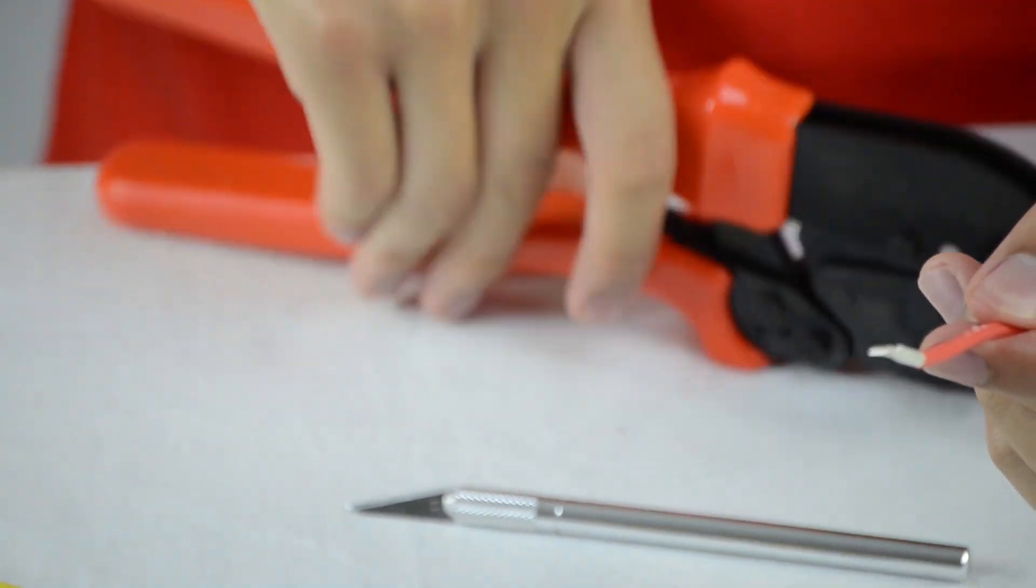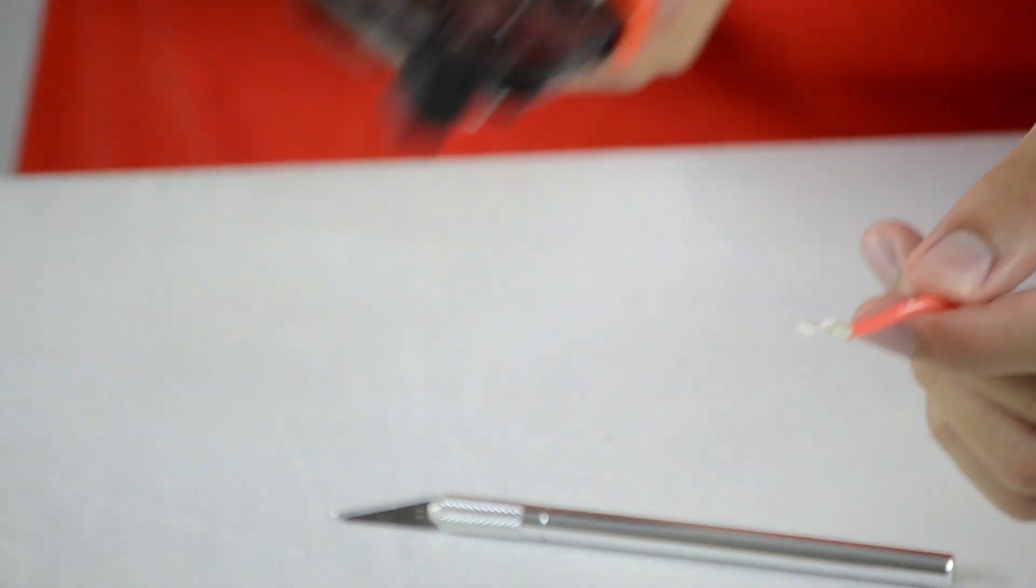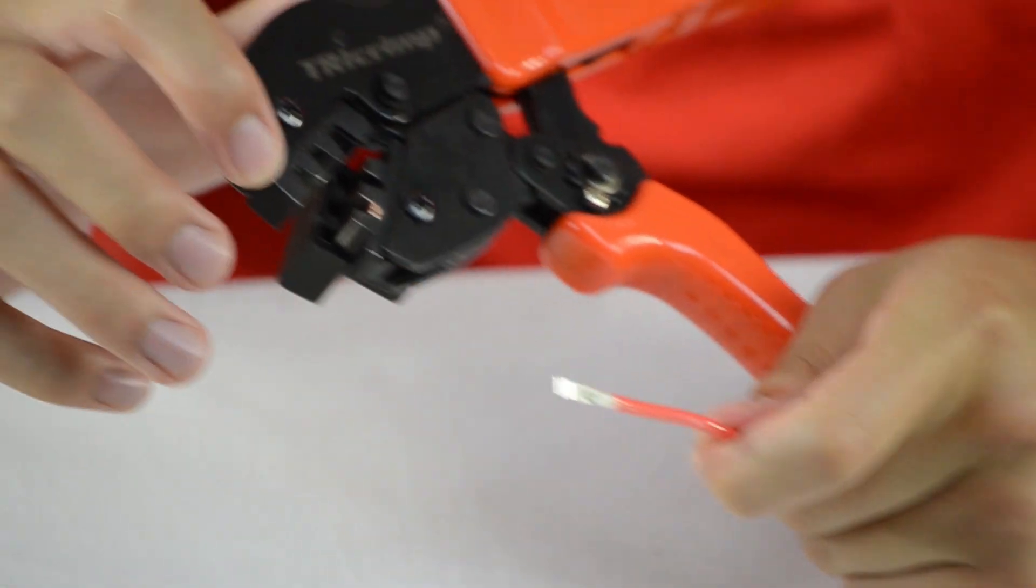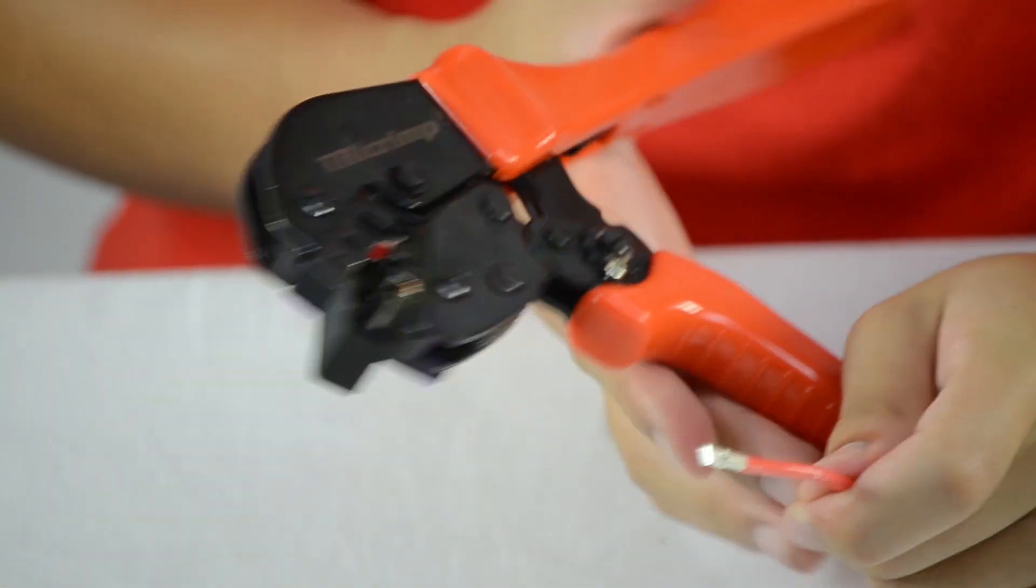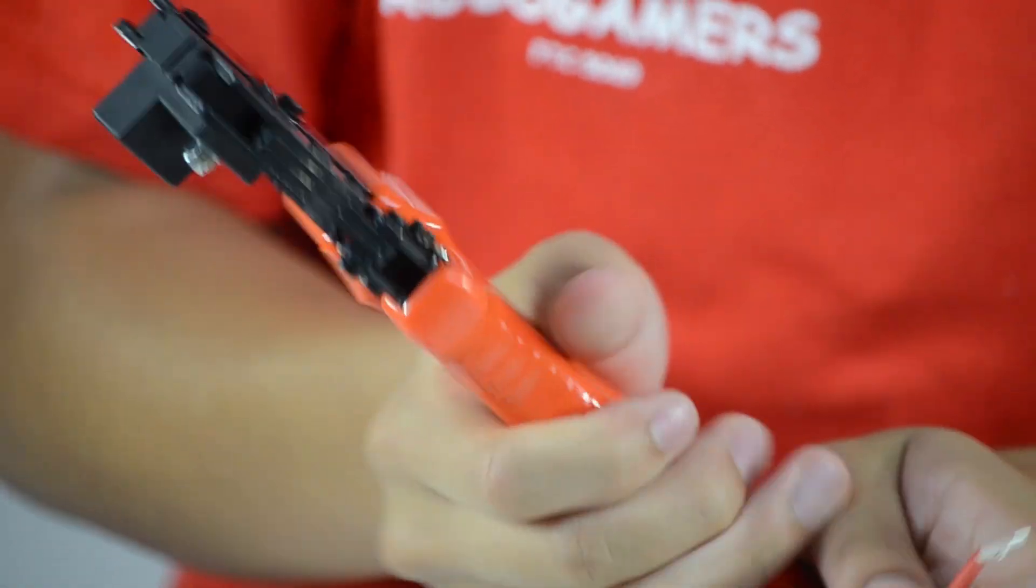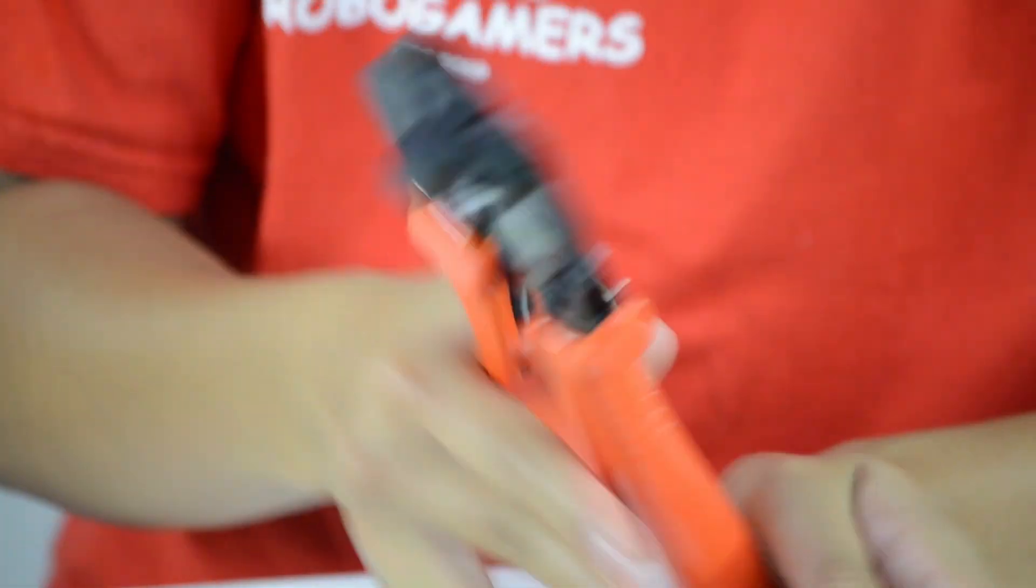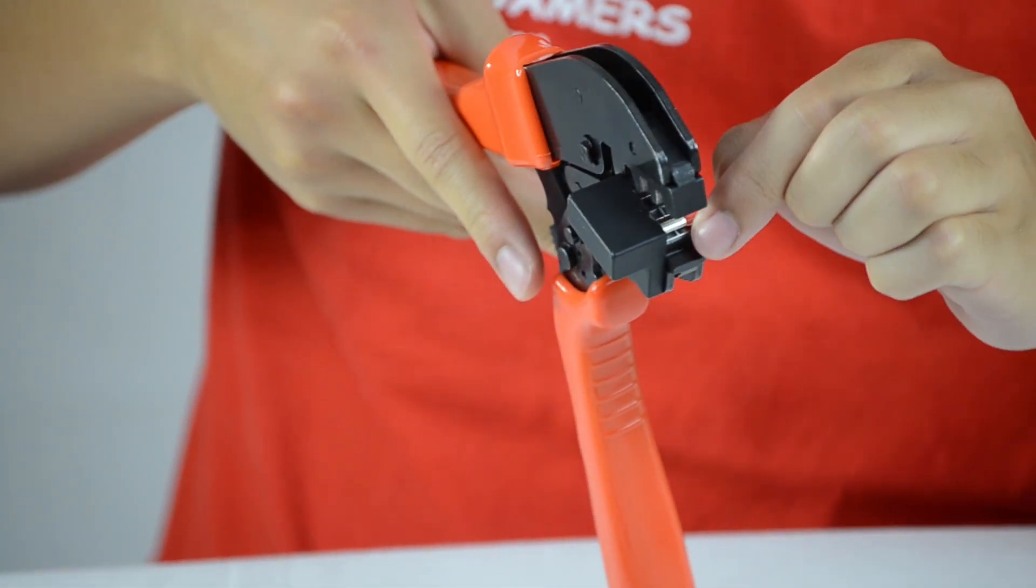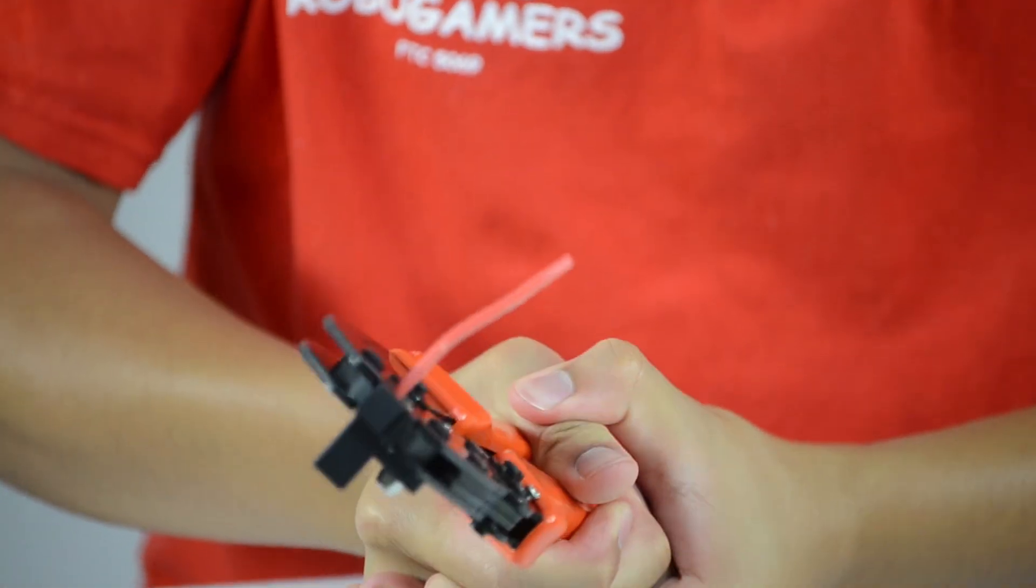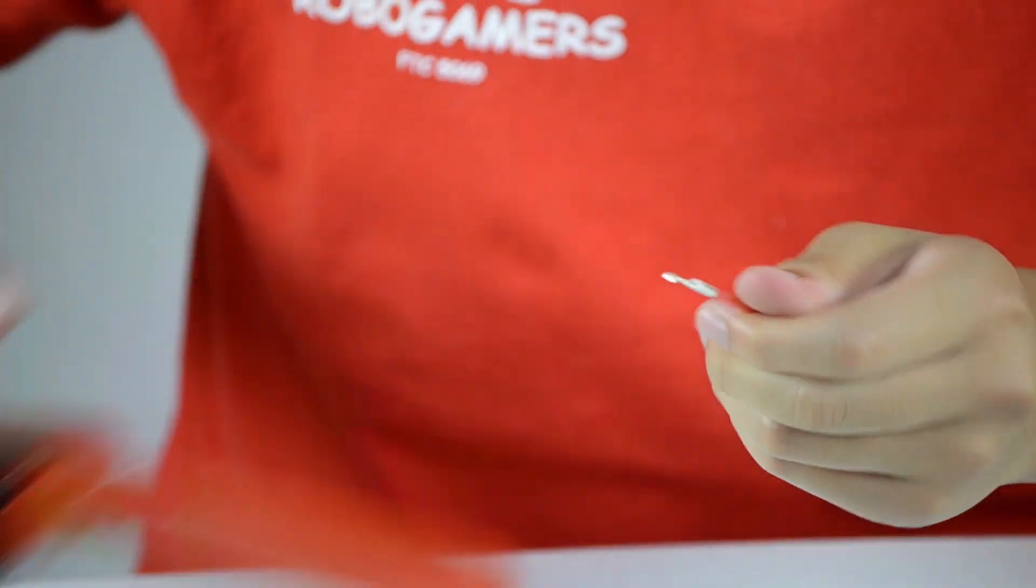And now you want to take your crimper and see the 15 gauge hole. You're just going to simply insert it into it just with the hump facing down or the bump facing down like that and just crimp it. All right, now you have this end complete.